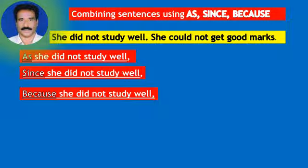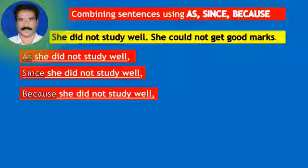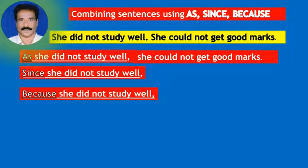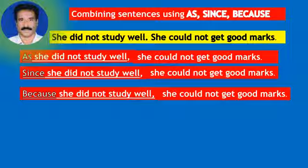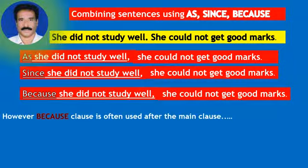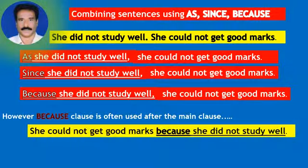As, since, or because clauses are used with the main clause to combine sentences. The combined sentences are: As she did not study well, she could not get good marks. Since she did not study well, she could not get good marks. Because she did not study well, she could not get good marks. However, the because clause is often used after the main clause: She could not get good marks because she did not study well.